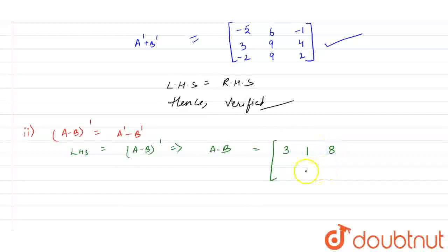So let us write 3, 1, 8, this will be 4, 5, 9, minus 3, minus 2 and 0.